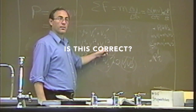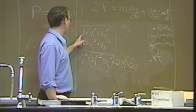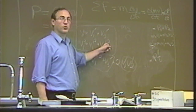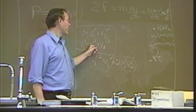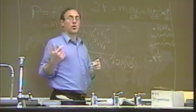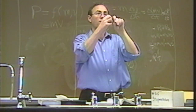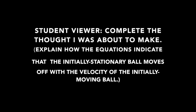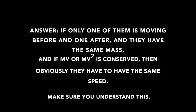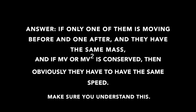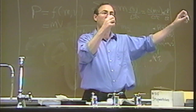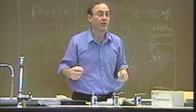Now v1 prime is zero, so from the energy equation v1 squared = v2 prime squared, which means v2 prime = v1. The struck ball moves off with exactly the same velocity the incoming ball had. When both masses are equal, the incoming ball stops completely and transfers all its velocity to the other ball.